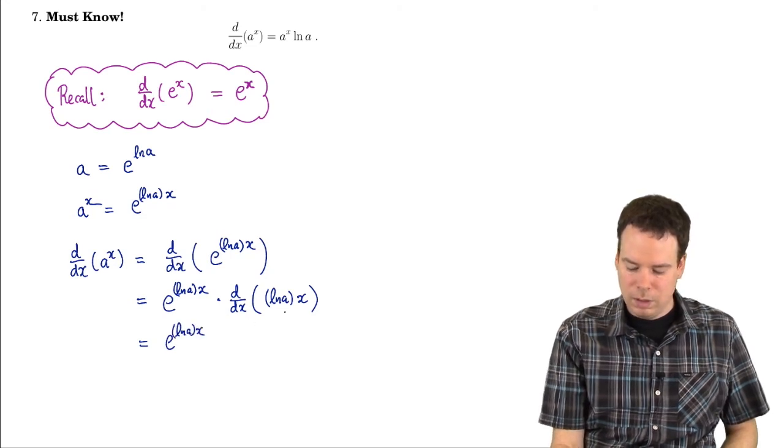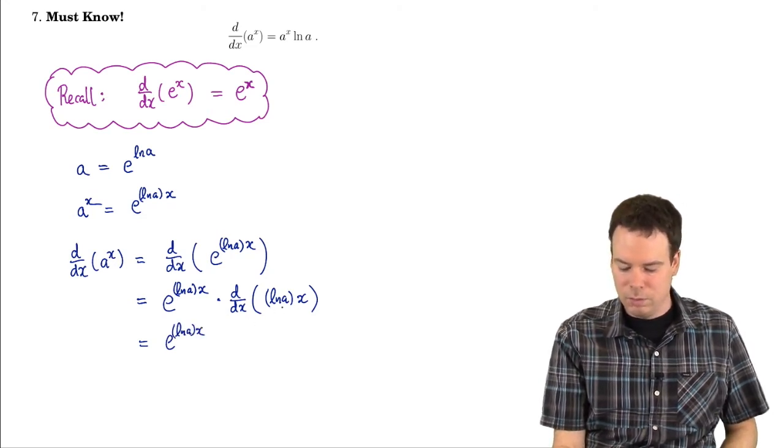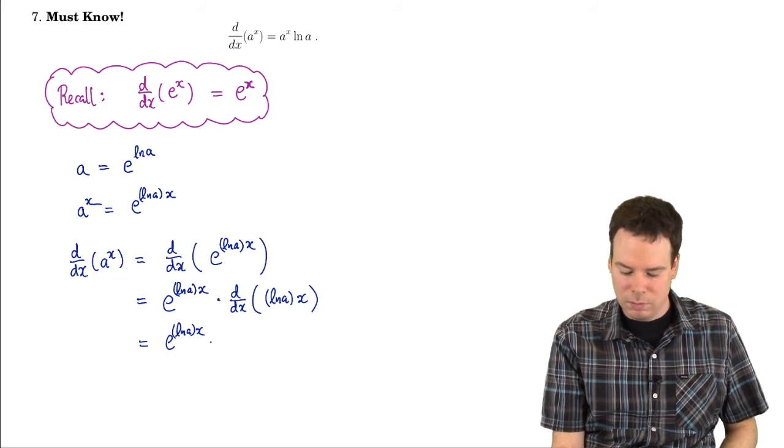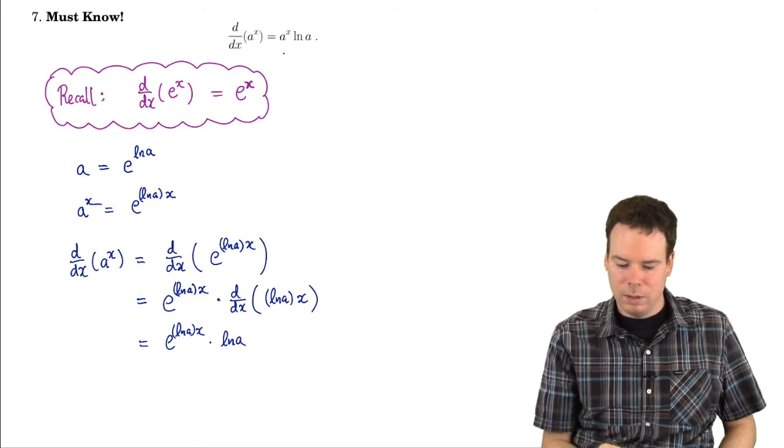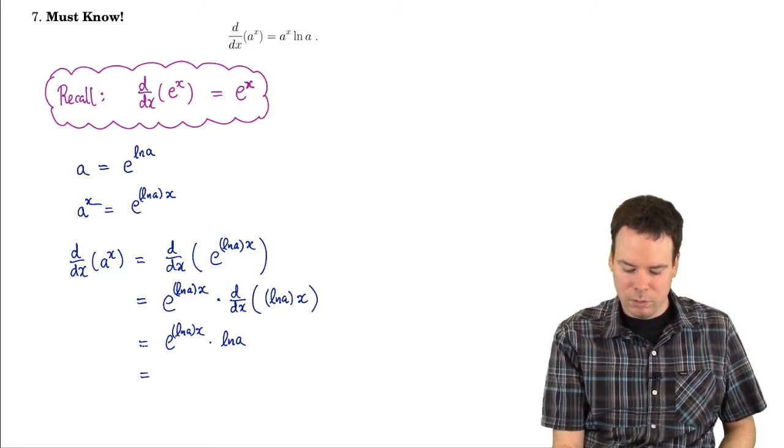Well, the derivative is just going to be that constant. The derivative of a constant times x is just a constant in front. So it's going to be ln of a. And this is where that ln of a is coming from in the differentiation rule as written above.